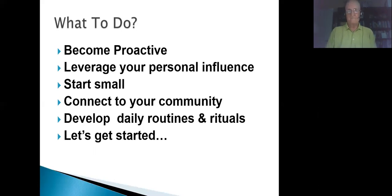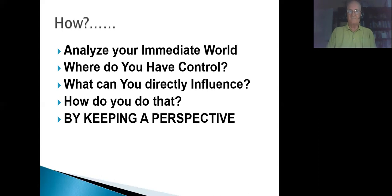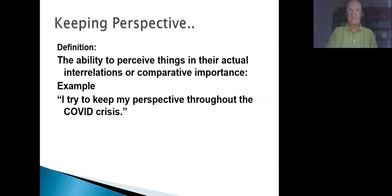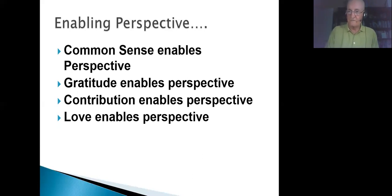What to do? You become proactive. You leverage your personal influence. You start small. You connect to your community. You develop daily routines and rituals. Let's get started. How? By analyzing your immediate world. Where do you have control? I've got some breaking news for you. You have very little control almost over anything. You can control what goes on between these two things, your ears. And what can you influence? You can influence your family and your community, depending on what level you're at. And how do you do that? By keeping perspective. And keeping perspective is the ability to perceive things in their actual interrelations or comparative importance. Common sense enables perspective. So does gratitude. Being grateful for what you have. So does contribution. And so does love. Love enables perspective.